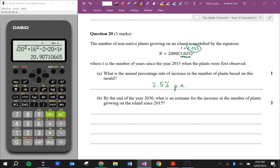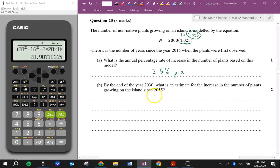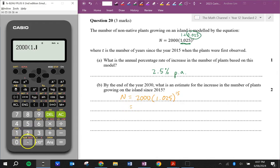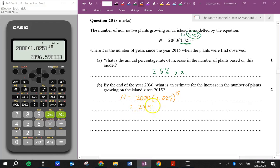By the end of the year 2030, what is an estimate for the increase in the number of plants growing on the island since 2015? So let's look at how many there were. 2,000, 1.025 to the power of 15, because there are 15 years between 2030 and 2015. 2897. We'll just round to the nearest whole number because we can't have 0.6 of a plant. So what is an estimate for the increase in the number of plants? Therefore, increased by 2897 minus 2000 is 897 plants.